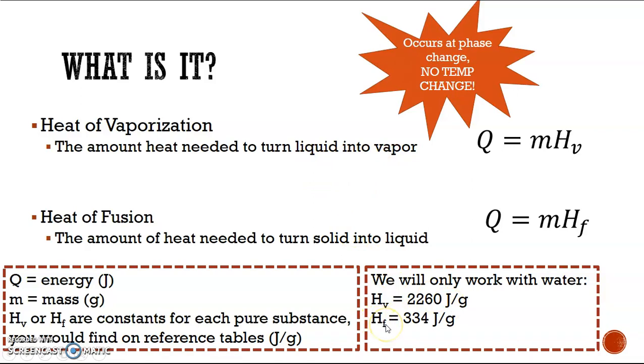The Hf, heat of fusion for water, is 334 joules per gram, which means that for every one gram of water, it takes 334 joules of energy to turn it from solid to liquid. So be sure to add those two constants to our equation chart as well, that sheet that we've been growing.